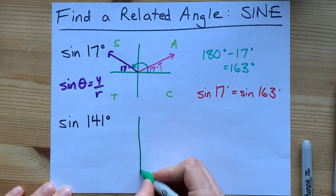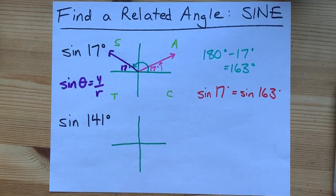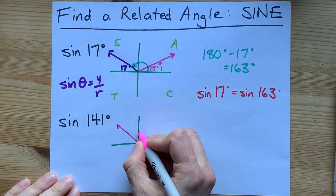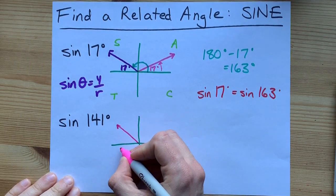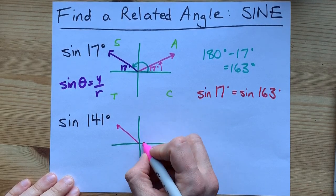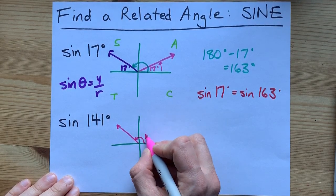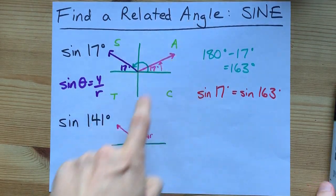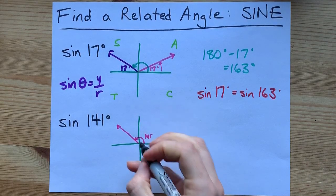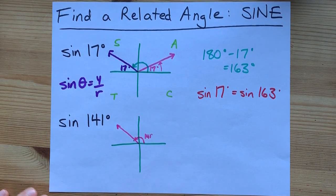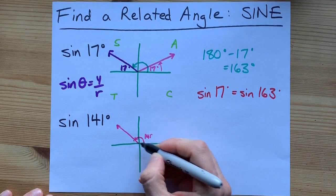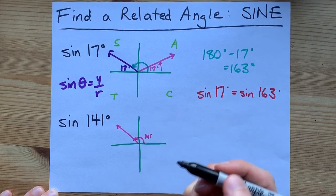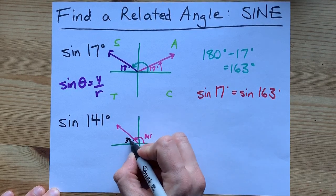Where is 141 degrees? 141 degrees is over here because this is 0, that's 90, that's 180. 141 is between 90 and 180. This specifically is 141 degrees. Now we always measure our acute angles relative to the x-axis. So how big is that angle there? Well, it's that amount. 141 is that amount short of 180. 180 minus 141 gives you 39 degrees.